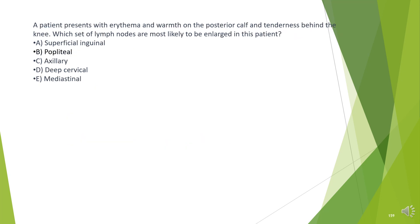A patient presents with erythema and warmth on the posterior calf and tenderness behind the knee. Which set of lymph nodes are most likely to be enlarged in this patient?